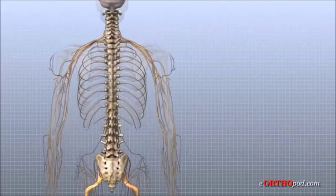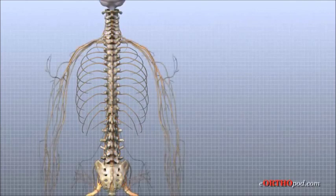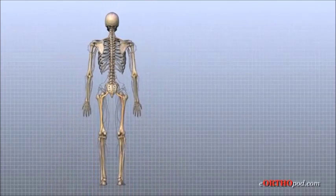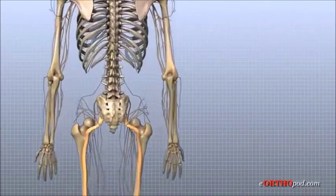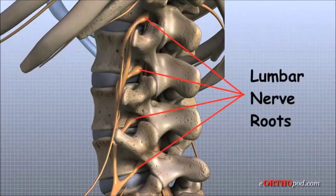As the spinal cord travels from the brain down through the spine, it sends out nerves on the side of each vertebra called nerve roots. These nerve roots join together to form the nerves that travel throughout the body and form the body's electrical system.